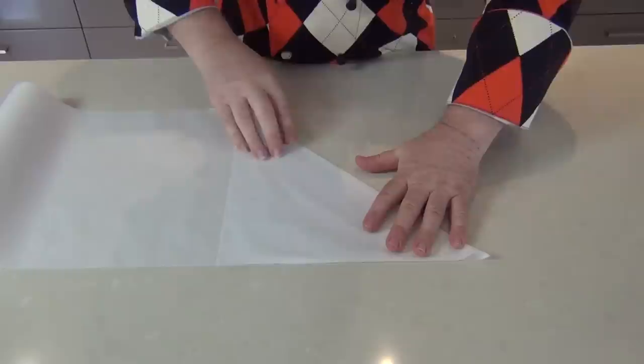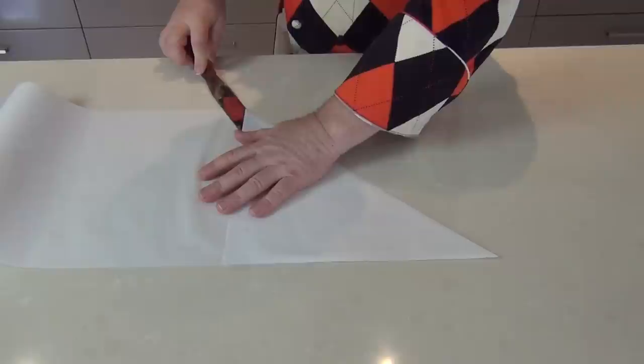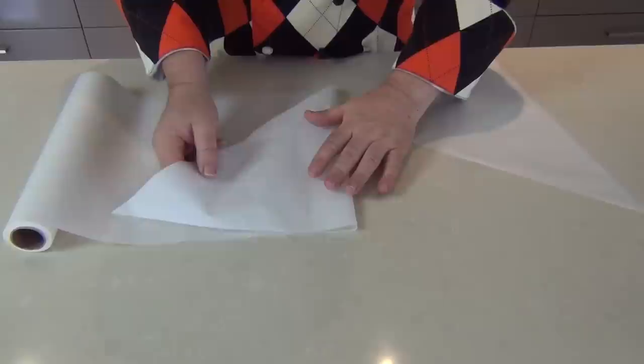So I'm just taking a piece of greaseproof paper or baking paper. People around the world call it different things. This is baking paper but wax paper will do. I'm just folding it over to get a perfect triangle and I'll use a palette knife then just to slice through and cut myself out a triangle.